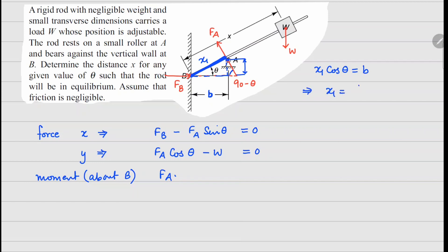So x1 is going to be B divided by cos theta. FA times B over cos theta gives the counterclockwise moment, and this has to equal W